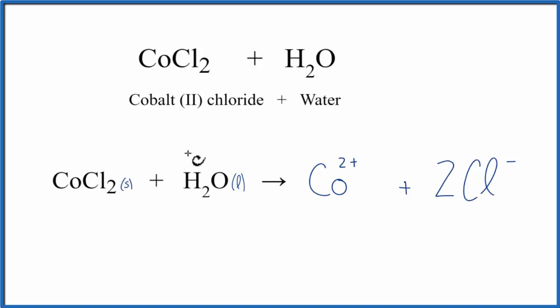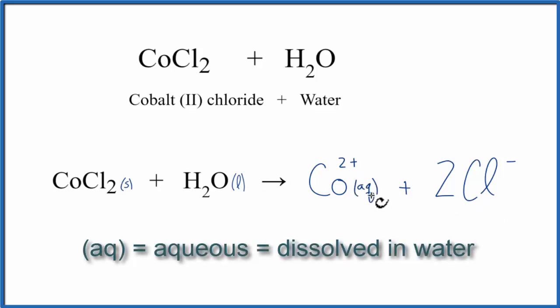Since we've dissolved the solid in the liquid, we can write (aq) after each of these ions here to show that it's aqueous, or dissolved in water. Because we've done that, we don't have to write H₂O on this side of the equation. These ions are aqueous. They're in water.